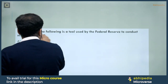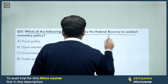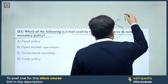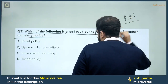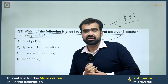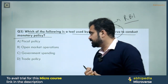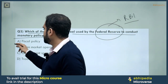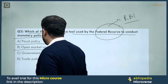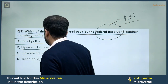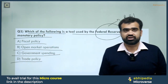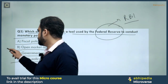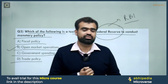Next question: which of the following is a tool used by the Federal Reserve — or RBI — to conduct monetary policy? Options: A) Fiscal policy, B) Open market operations, C) Government spending, D) Trade policy. The correct answer is option B — open market operations, which is a tool of monetary policy.